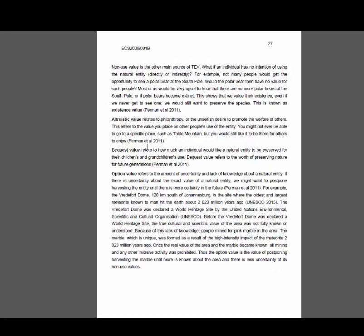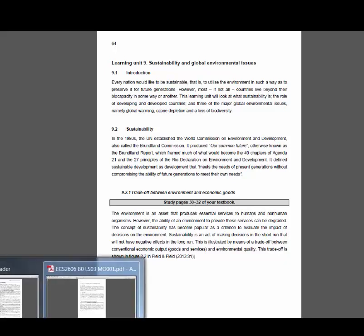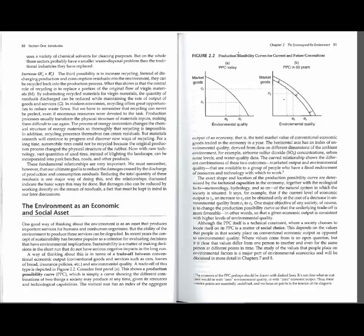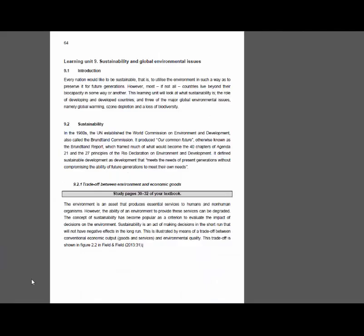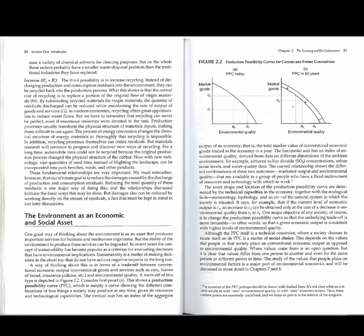This question is way down in Learning Unit 9. It has to do with sustainability, and there's a section that talks about trade-offs between the environment and economic goods, which refers me to my textbook. Here is the production possibility curve. The only way I could have known to go to my MO document was if I read the work before I started with the assignment — and it's not a waste of time, you're preparing for the exam. So make sure you read it, then go back to your MO document, which refers you to your textbook. I'm going to read this section, and then you can start with the introduction.